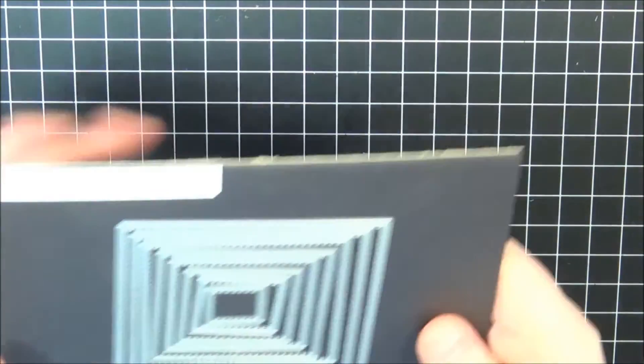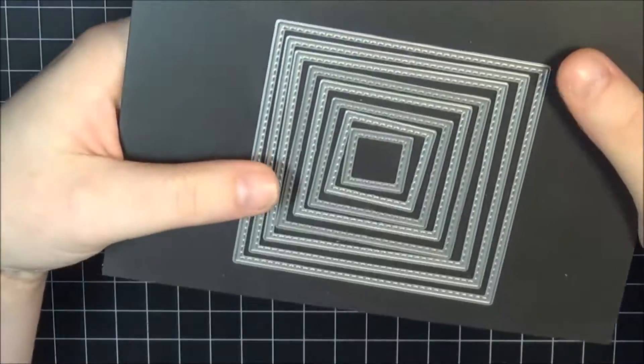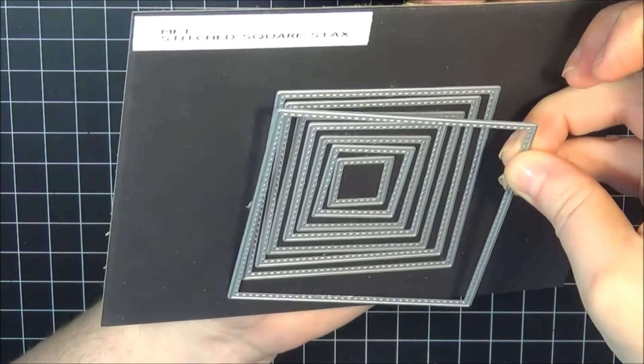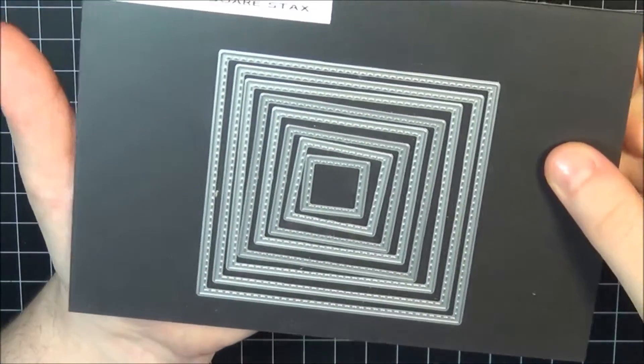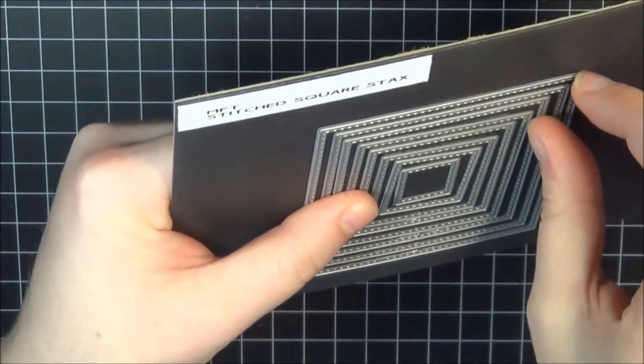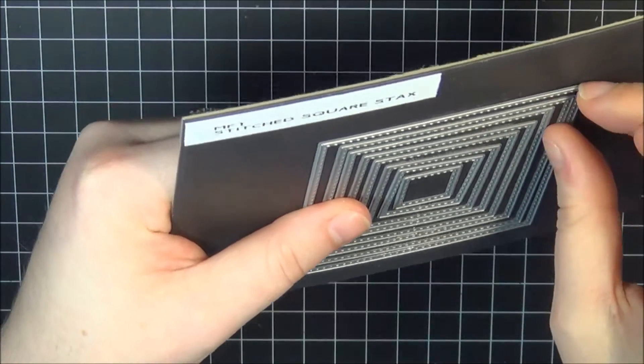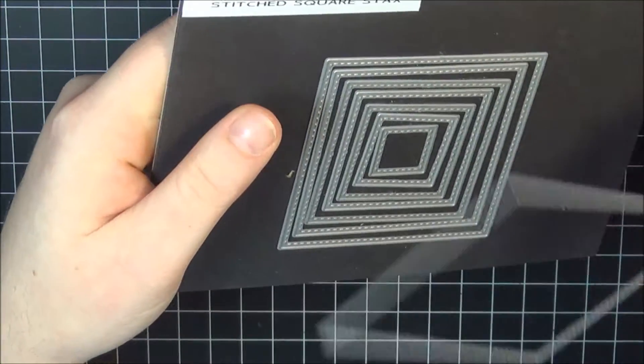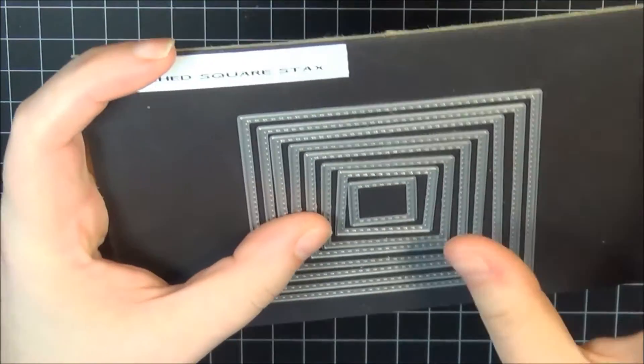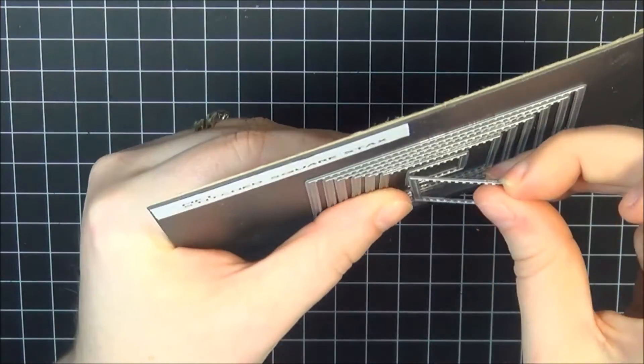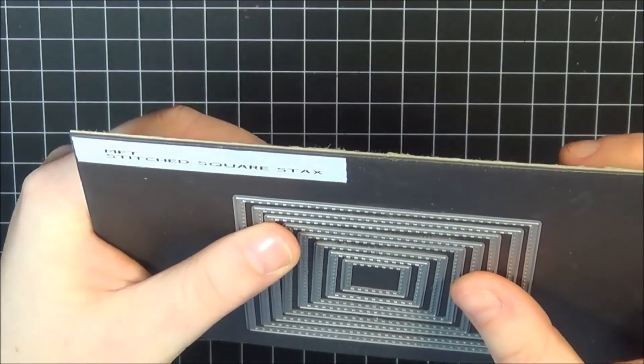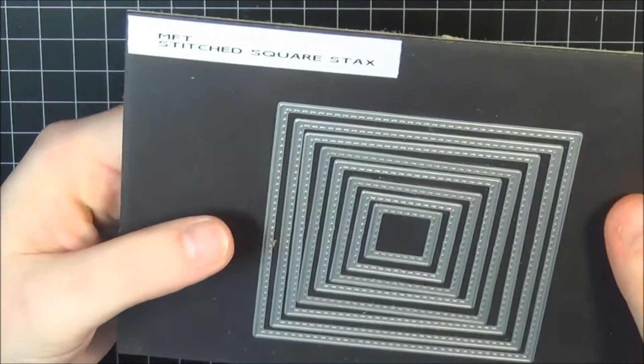Next I have this die set from MFT. This is the stitched square stacks. I've been trying to change it up a little bit as far as my card size that I make. I've been making a few, getting into making square cards a little bit more. So I picked this die set up because I didn't really have anything as far as dies go in the square shape. I picked this up with an MFT order that I placed, I believe it was beginning of the month or end of last month. I can't remember.